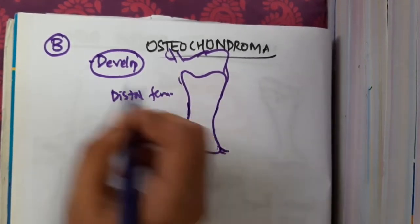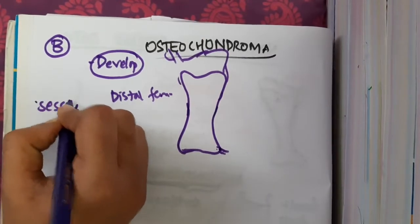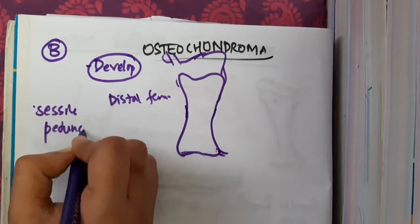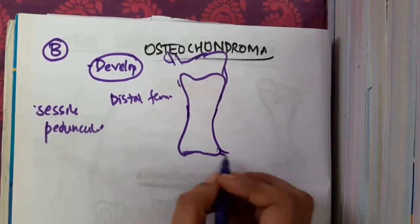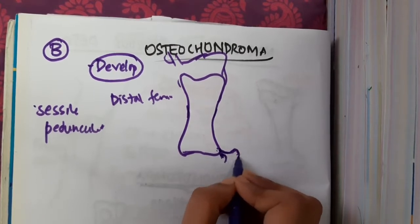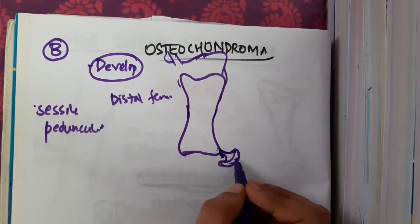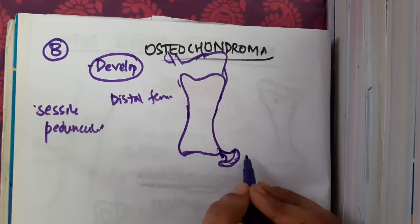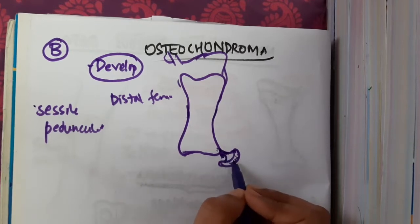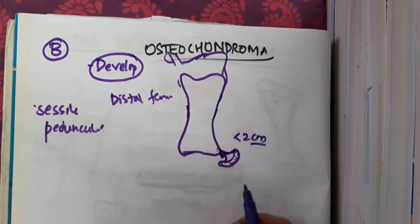In the metaphysis it is of two types: it can be either sessile type or pedunculated type. There is a cartilaginous overgrowth surrounded by a cartilaginous cap, and the size of the cartilaginous cap is usually less than two centimeters.